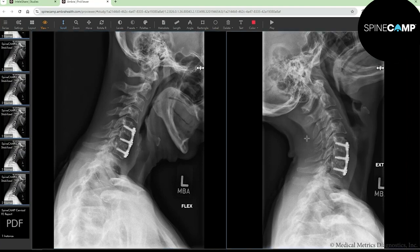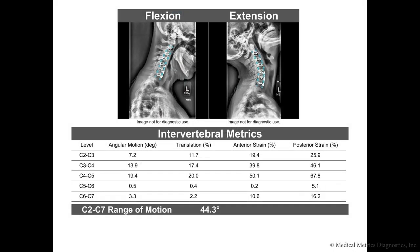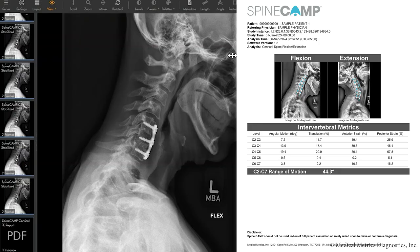Clicking on the EFE report in the right view pane, we can visualize the angular motion and strain required to apply the protocol. Looking at the data for C5-C6 across that row, we can see there is half a degree of angular motion, 0.2% strain at the anterior margin, and 5.1% strain at the posterior margin. Since strain is greater than 5%, we need to consult the stabilized imaging to make our final diagnosis.